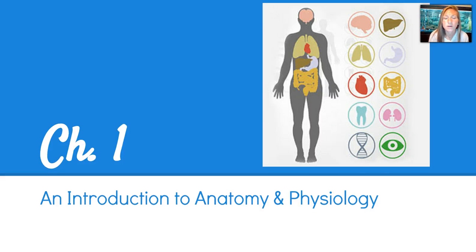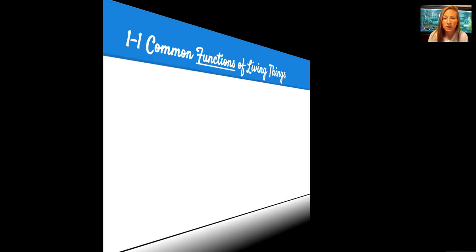Hey everyone, it's Ms. Carlson here. We're going to take our first set of Cornell Notes over Chapter 1, which covers the Introduction to Anatomy and Physiology. It mostly includes a lot of terms that we are going to use throughout the year to help us describe what we're doing in our labs, so make sure you have a good notebook sheet of paper or a template that I provided on Schoology. Let's go ahead and get started.